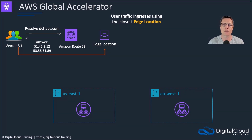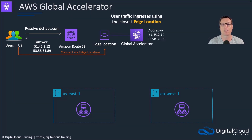The users get directed to the edge location, and then Global Accelerator — which is listening on these IP addresses — is able to accept the incoming traffic and then chooses where to forward it.